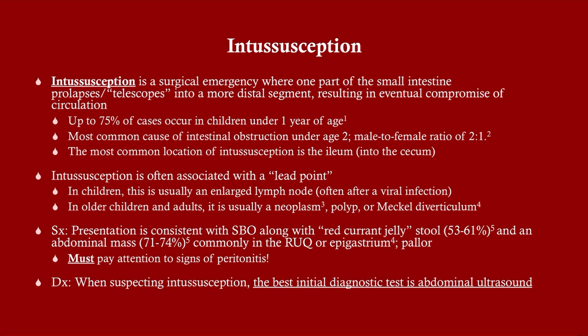75% of cases occur in small children under the age of one, and it is the most common cause of intestinal obstruction in children under the age of two. It tends to happen in males more than females. In children, this is usually due to an enlarged lymph node — commonly they have a viral infection such as rotavirus, with diarrhea, and then abdominal pain that does not go away, which can present a diagnostic challenge.